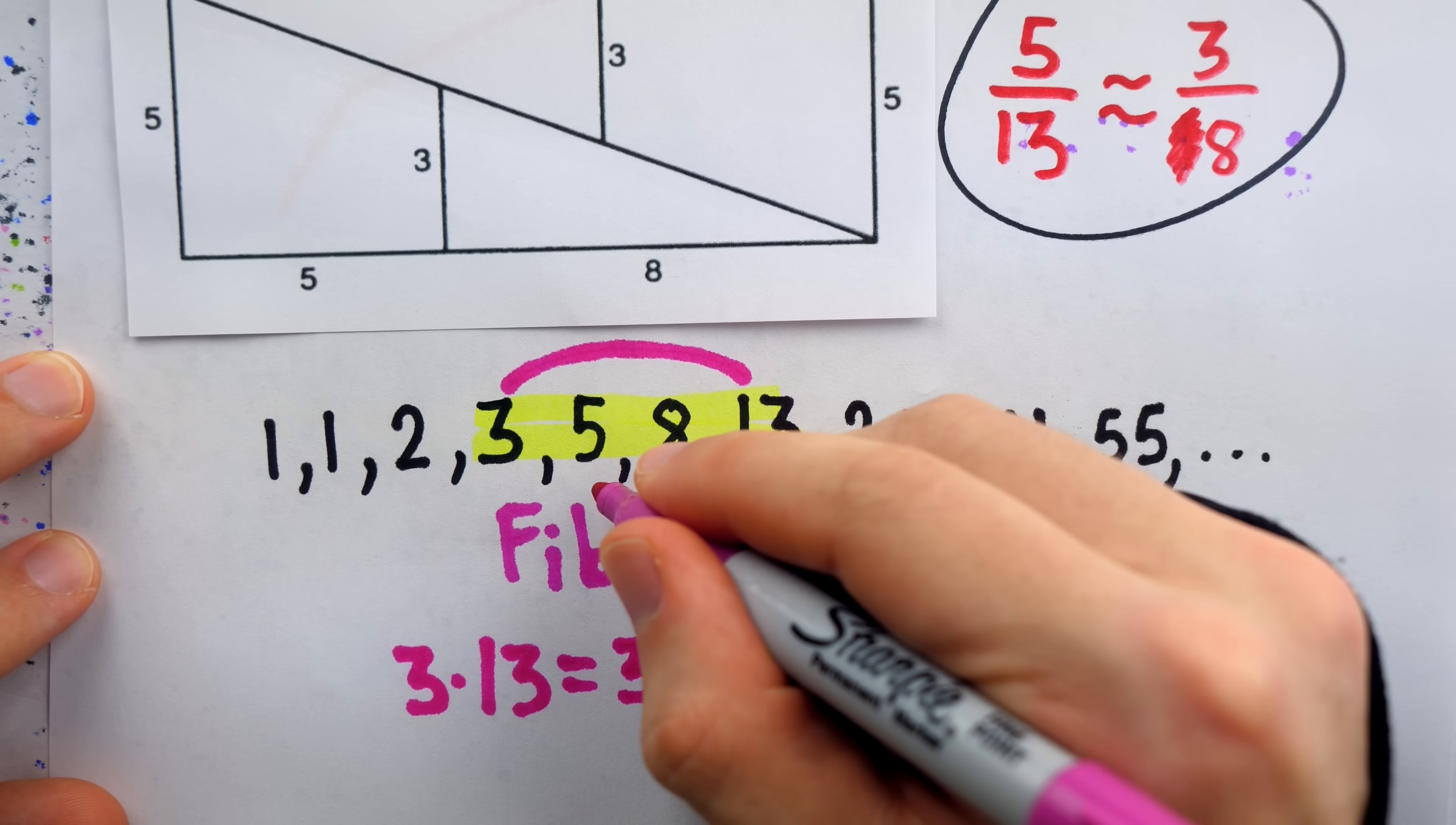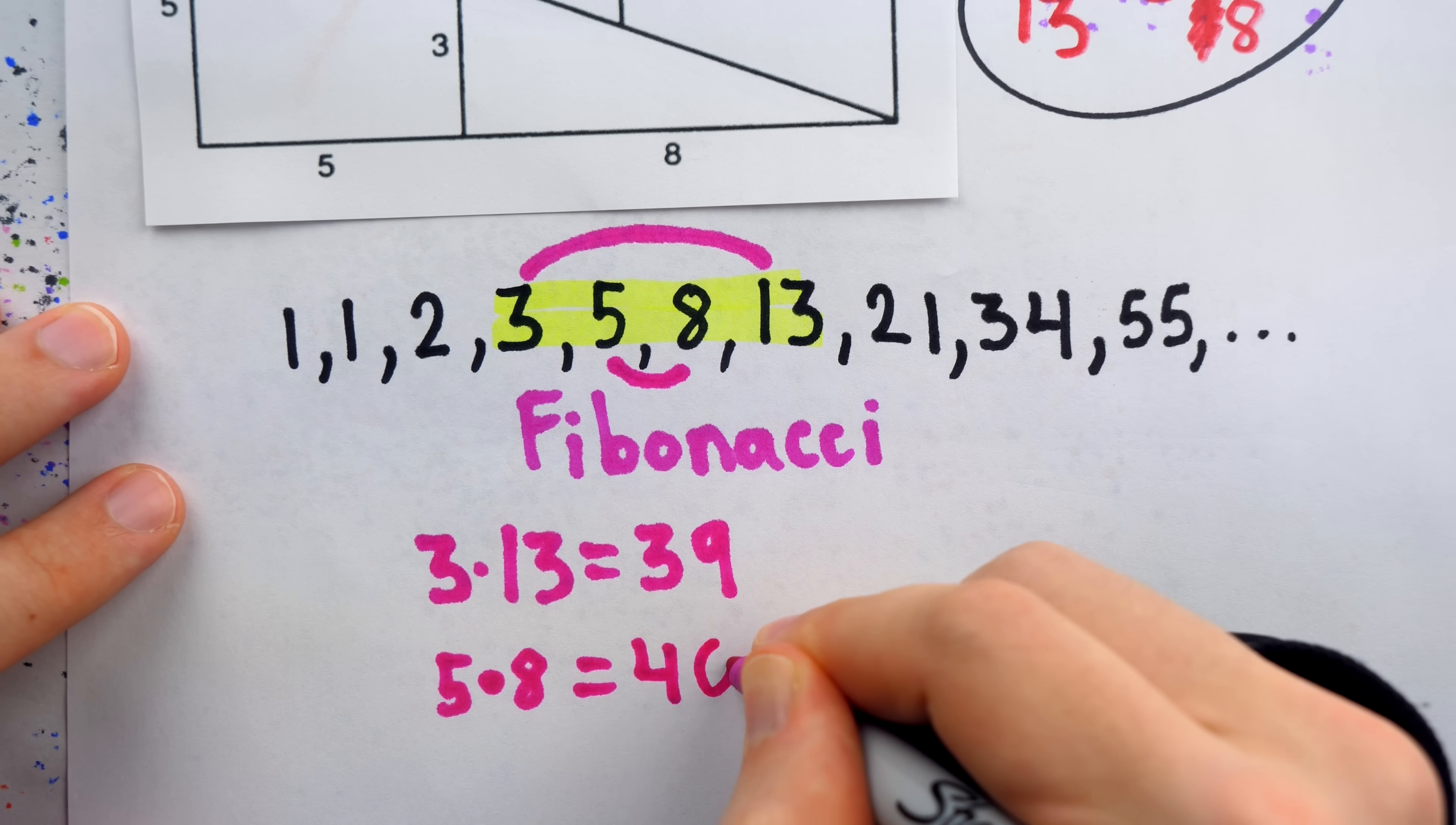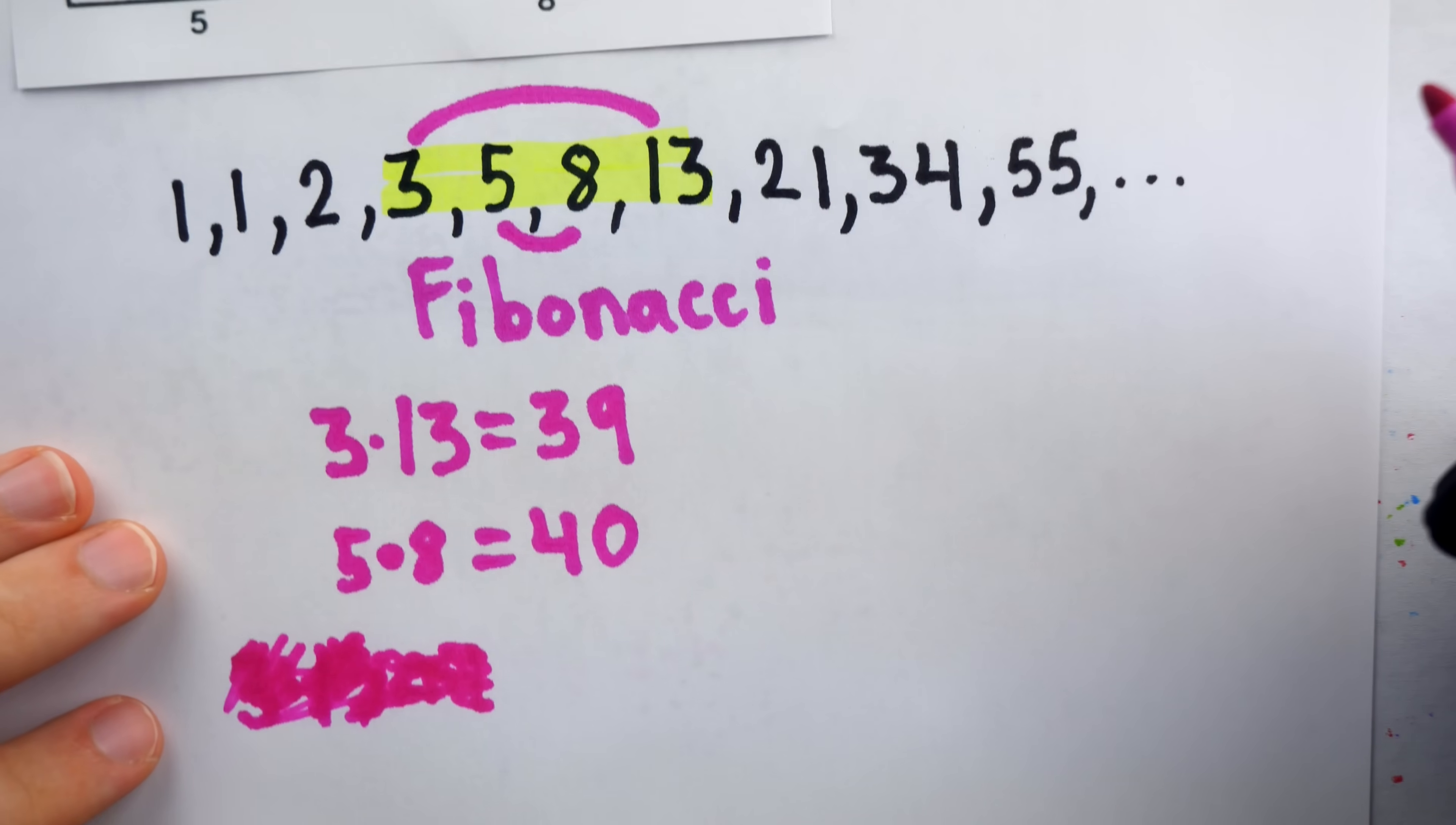Now, let's also take the inner two numbers and multiply those together. 5 times 8. That, of course, is 40, which is only 1 away from 3 times 13. And this small difference of 1 is what makes the trick work.